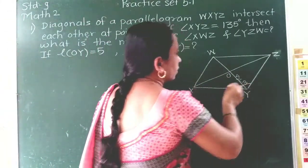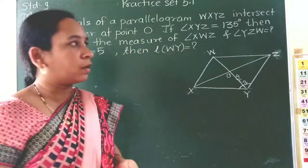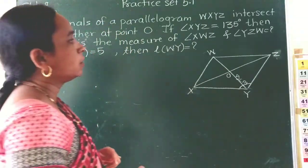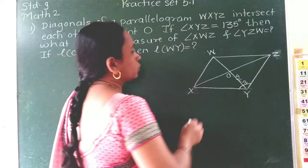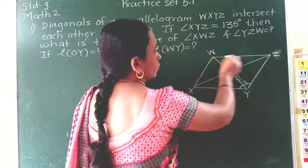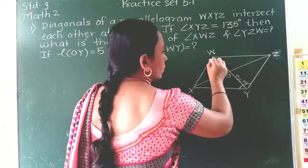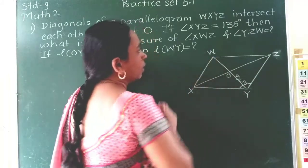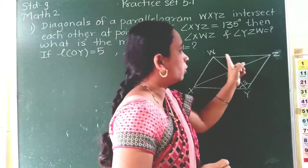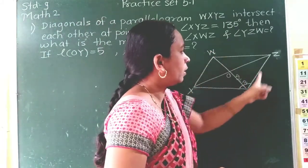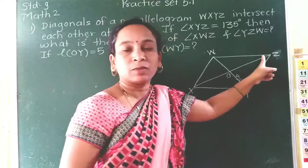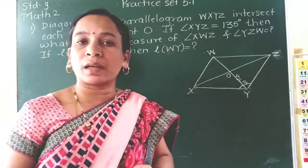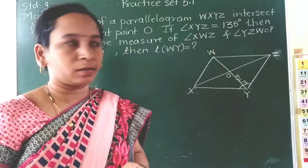This angle XYZ has a measurement of 135 degrees. Then, what is the measure of angle XWZ? Means we want to find out the opposite angle. And angle YZW — we have to find both the opposite angle and adjacent angles.